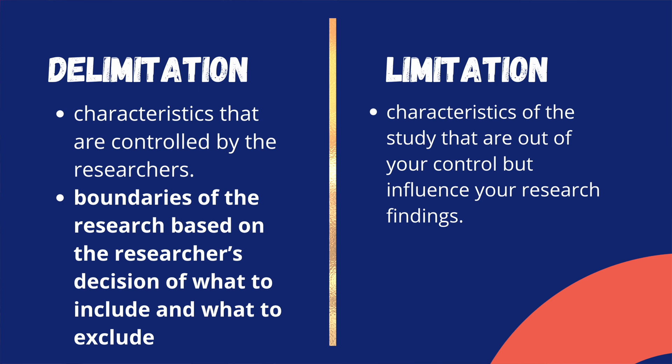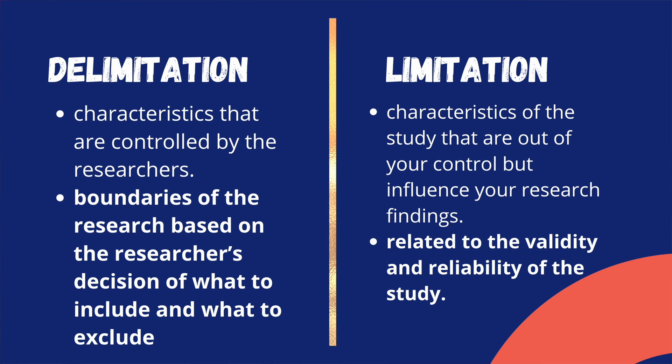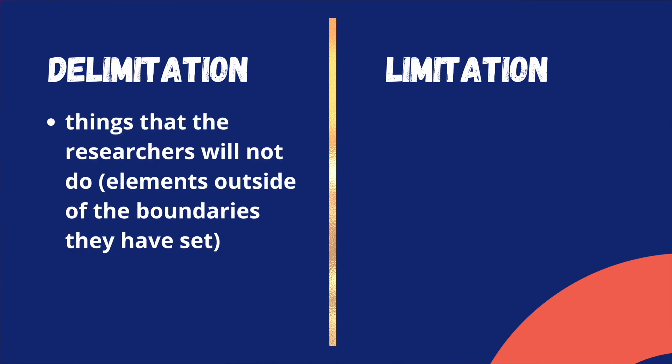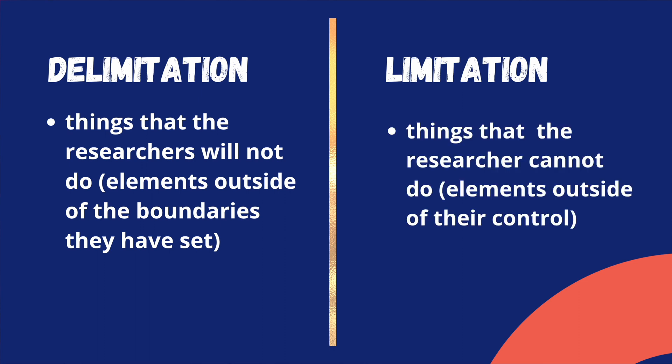Limitations are related to the validity and reliability of the study. In other words, delimitations are things that the researchers will not do — these are the elements outside of the boundaries that you are going to set. While limitations are the things that the researcher cannot do — these are the elements outside of your control.